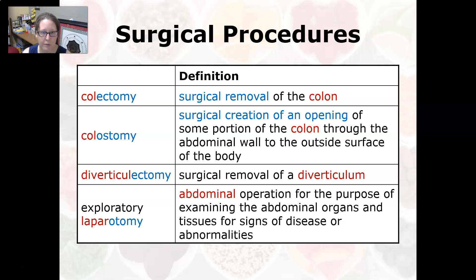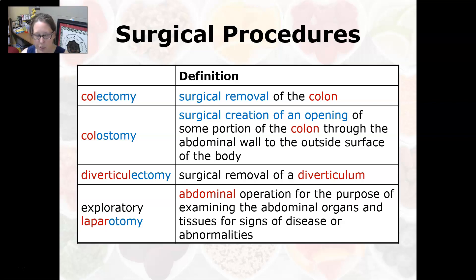A colostomy often follows a colectomy, and wherever the colostomy opening is, is where stool exits — sometimes requiring a collection bag. Diverticolectomy is the surgical removal of a diverticulum, which is an outpouching in the colon. Exploratory laparotomy is an abdominal operation for the purpose of examining the abdominal organs and tissues for signs of disease or abnormalities.